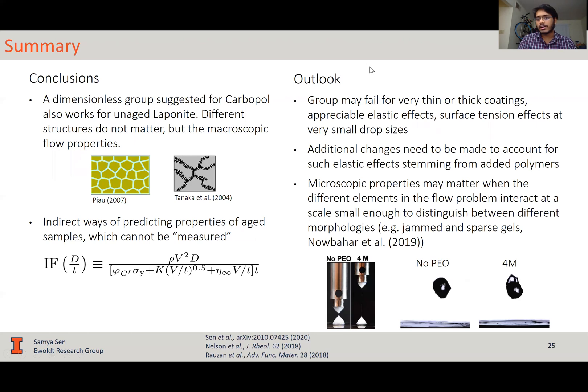Looking forward, as I mentioned before, this group may fail for very thin or very thick coatings or where there may be appreciable elastic effects or surface tension effects at very small drop sizes or smaller values of yield stress. Additional effects need to be accounted for for elastic effects stemming from added polymers as seen over here. These videos show carbopol, one pure carbopol, the other one with a small amount of a high molecular polymer added to it. As you can see, the splashing is completely suppressed. So these also have to be converted into this dimensionless group.